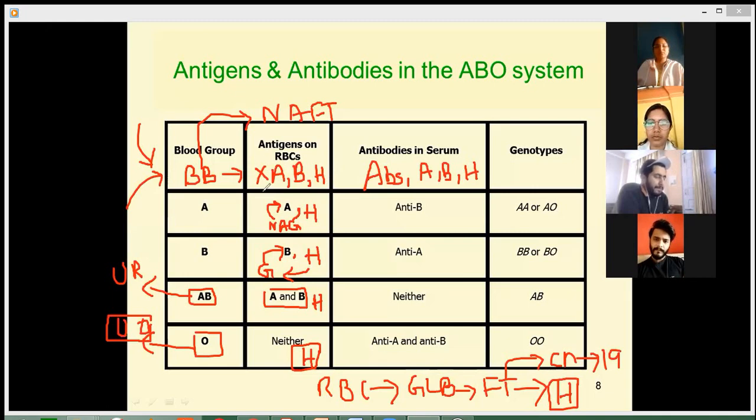When these antigens are not present on the RBCs, their antibodies will be formed in the plasma or serum. Antibodies A, B, and H are formed. Because of this reason, you cannot give the universal donor blood group O to the Bombay blood group patient. Bombay blood group patients can only give blood or take blood from Bombay blood group persons.